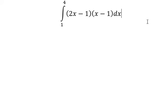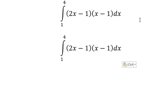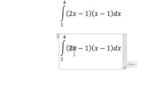We have to multiply 2x with x and negative 1, then negative 1 multiply with x and negative 1. So you will get like this: 2x² minus 2x minus x plus 1.